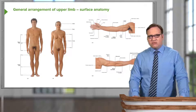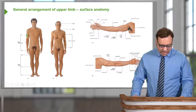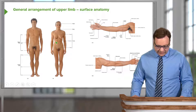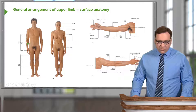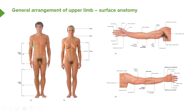If we look at the general arrangement of the upper limb, on this slide we can see a body plan of both the male and the female. On the male, we can see the upper limb indicated — specifically the arm region, which is connected to the trunk by way of the shoulder. Connecting the arm to the forearm, we have the elbow joint, and most distally, we find the hand, connected to the forearm via the wrist joint.